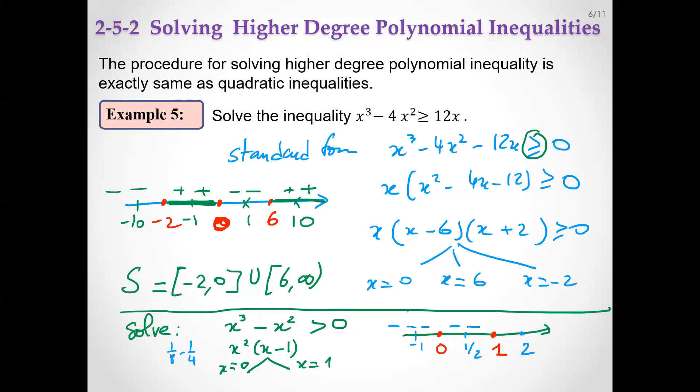For 2, 8 minus 4 plus. So here for positive we have only this part. So from 1 open to infinity. Good luck.